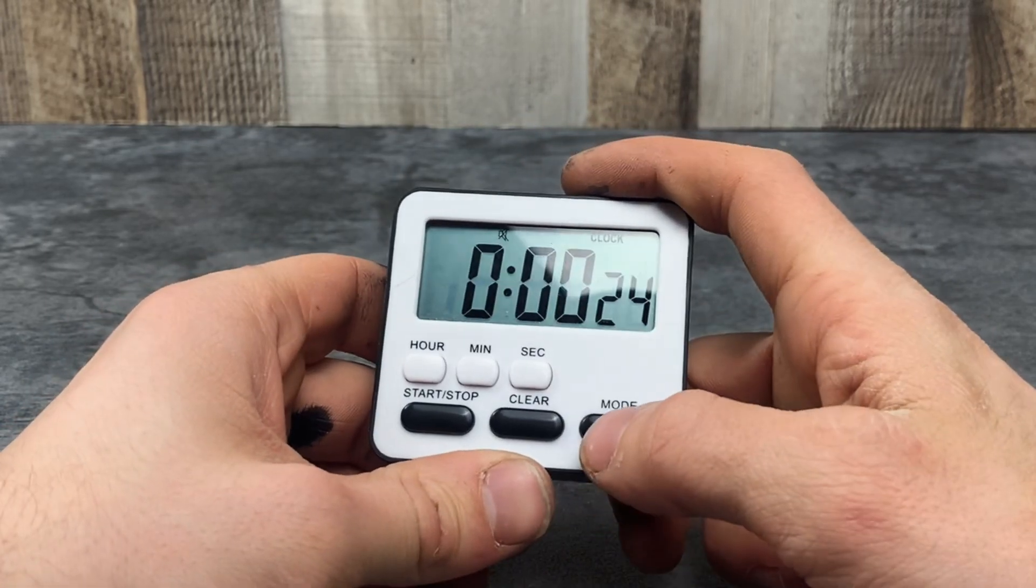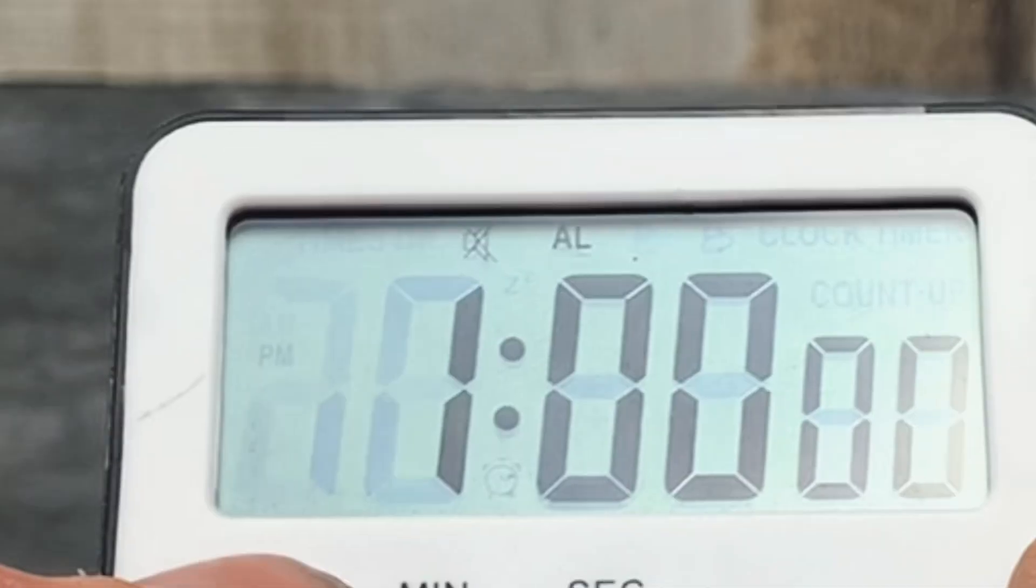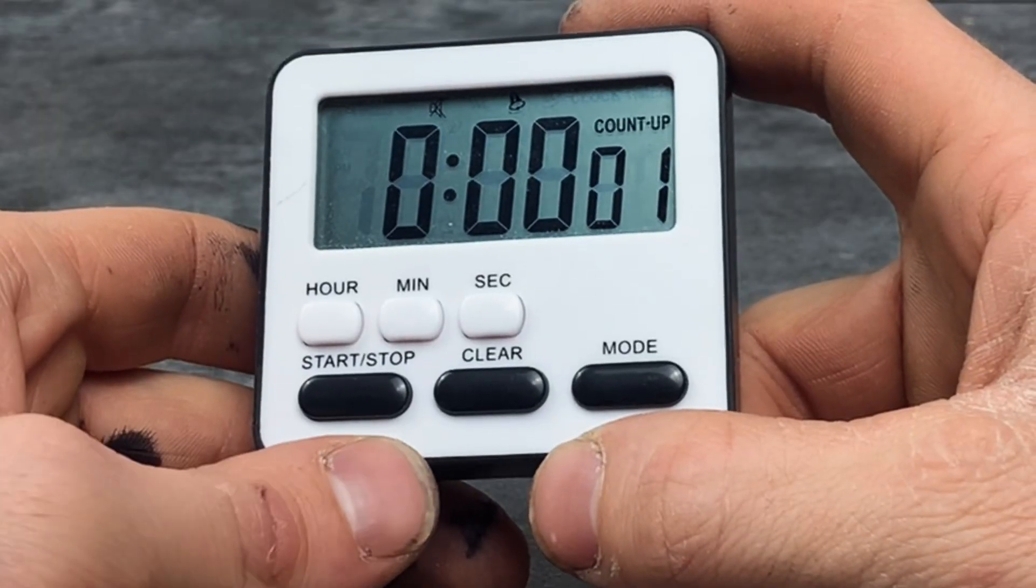You can choose between three modes: clock, timer, and alarm clock. The timer can count either up or down by typing in a time or just hitting the start button.